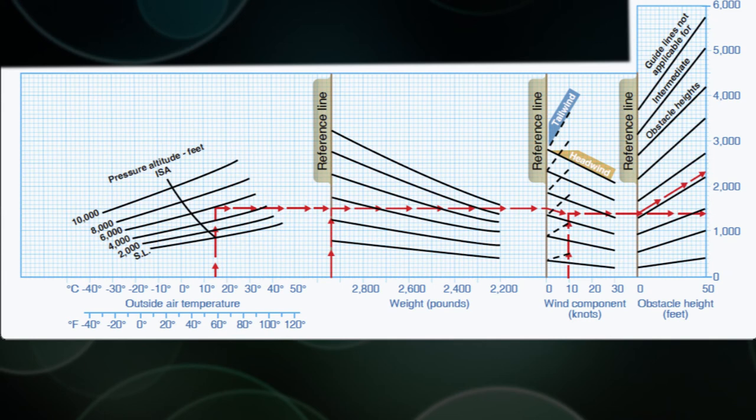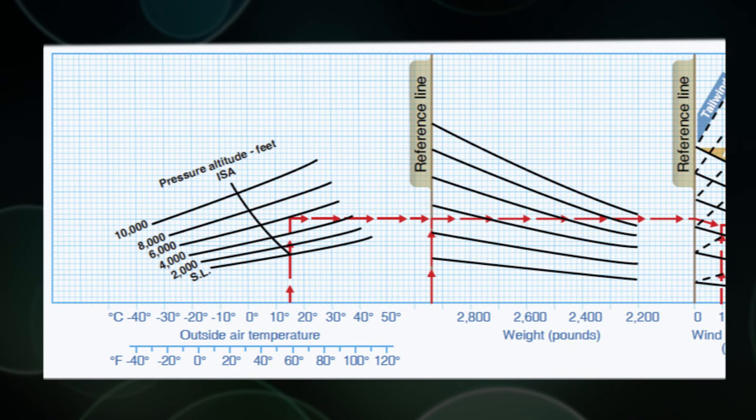The way it works is you follow the pressure altitude line slope until you meet your temperature. And once those two meet, you go straight across. So for example, if your pressure altitude was 9,000, you would follow the slope of those lines for 8 and 10,000. You'd be right in between them, and you'd follow that until you met with your temperature. Let's say that your temperature was 20. So you'd follow the slope of your pressure altitude of 9,000 until you met with 20 degrees. Once those two meet, you can follow straight across to the reference line.